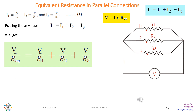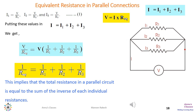Taking V common and cancelling it from both sides, we get the final equation: 1 over Re equals 1 over R1 plus 1 over R2 plus 1 over R3. This is the equation for total equivalent resistance in a parallel circuit — the reciprocal of the total equivalent resistance equals the sum of the reciprocals of all individual resistances.